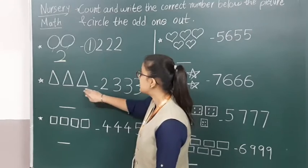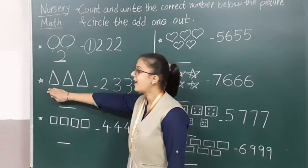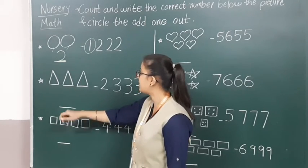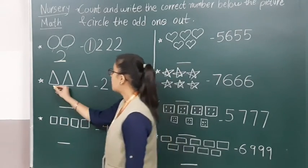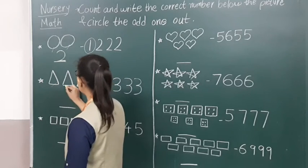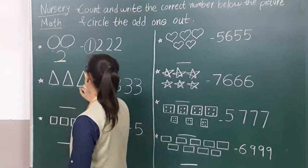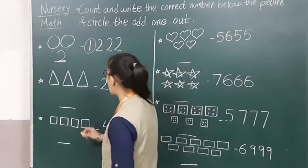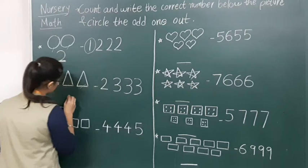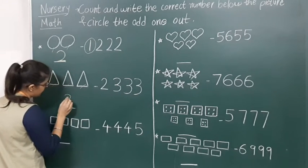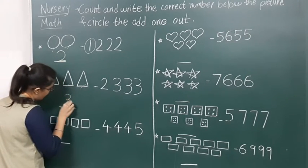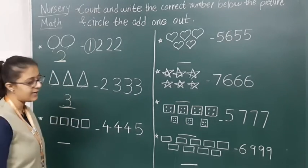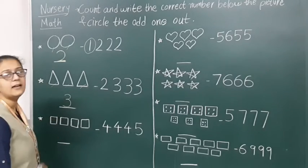Now moving to the next picture. Which shape is this? Triangle, right? So how many triangles do we have? Come on, count with me: one, two, three — three triangles. So how to write number 3? One half curve, one more half curve — that half curve should touch the bottom line. Number 3.